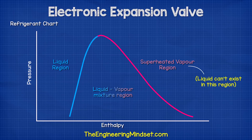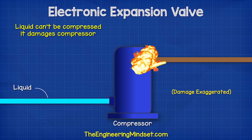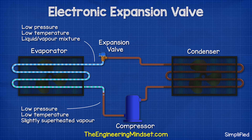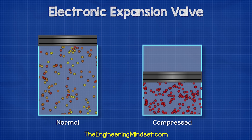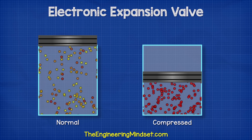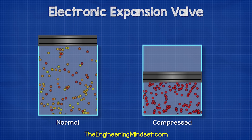Superheated basically means it's now completely gas and doesn't contain any droplets of liquid refrigerant. Liquid damages the compressor so we want to ensure it can't reach the compressor. The compressor sucks in the refrigerant leaving the evaporator as a low pressure, low temperature, slightly superheated vapor. It then squeezes this together into a much smaller space and so the pressure increases. All the heat which was picked up in the evaporator is now contained in a much smaller volume so the temperature will increase.